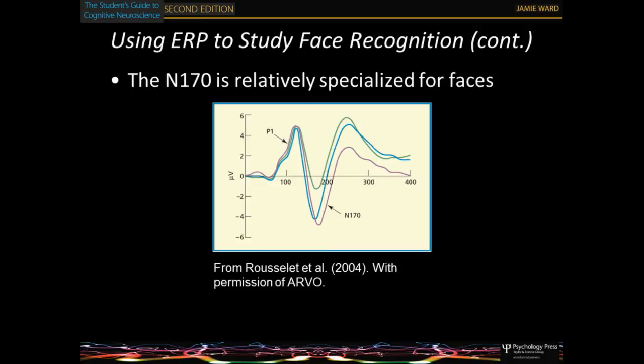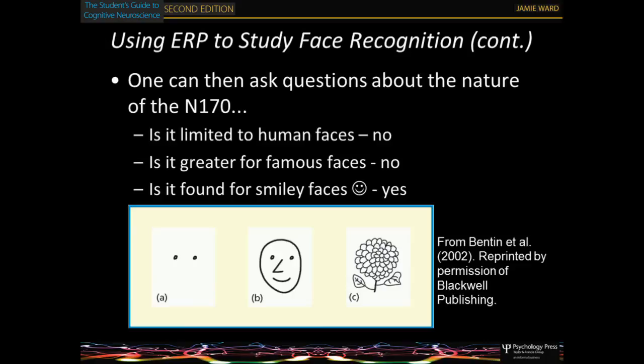We're not really interested in the exact timing here — whether it's 150 or 200 milliseconds. We're trying to understand how cognition happens by asking clever questions about what is really giving rise to that component. Is it high-level concepts? Is it superficial similarity to faces?